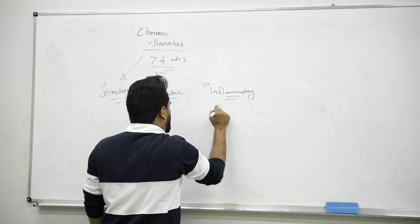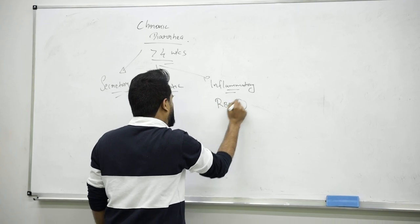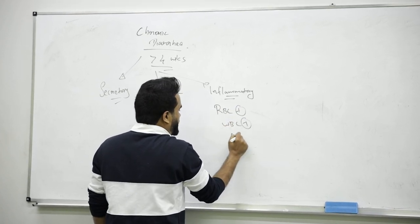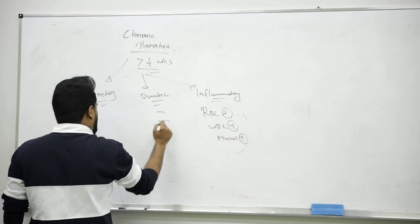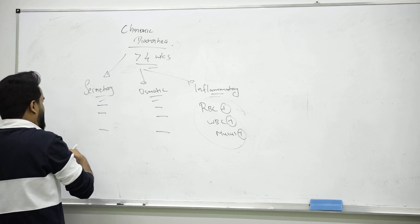Inflammatory type of diarrhea is very easy to diagnose. You will see RBCs in the feces, WBCs, or mucus. But it will be negative for both secretory and osmotic.